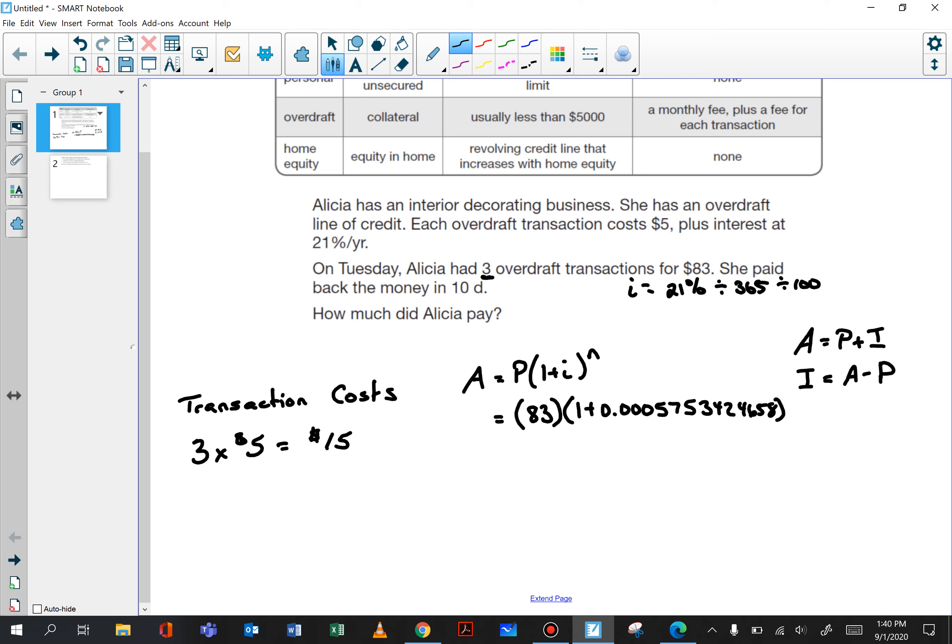And she's paying it back in 10 days so N is 10. As we've done before, inside the brackets first, then the exponent, and then we multiply. One plus 0.000575342466 to the power of 10.